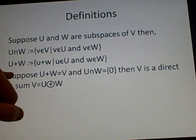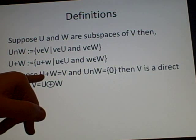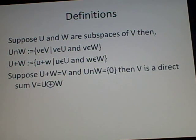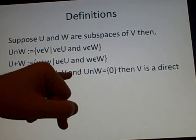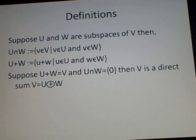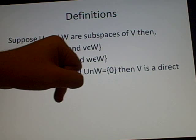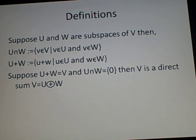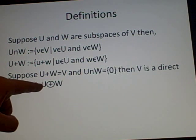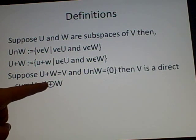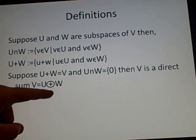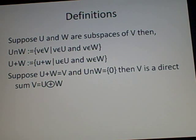Now suppose U+W = V and U∩W = {0}, so there is no intersection between the two subspaces. Then we say that V is a direct sum, V = U⊕W, with the circle-plus symbol.